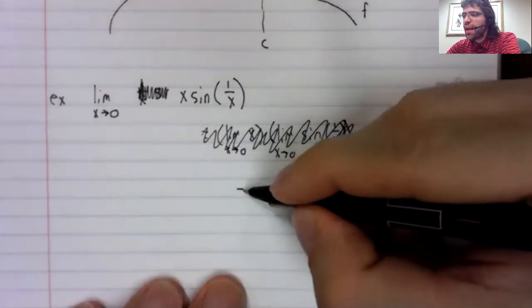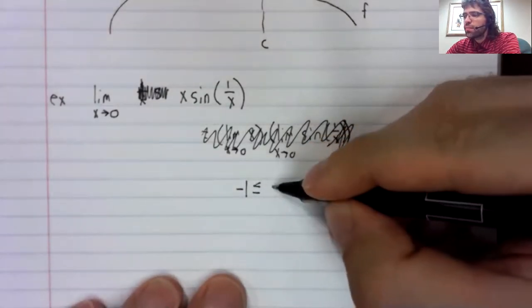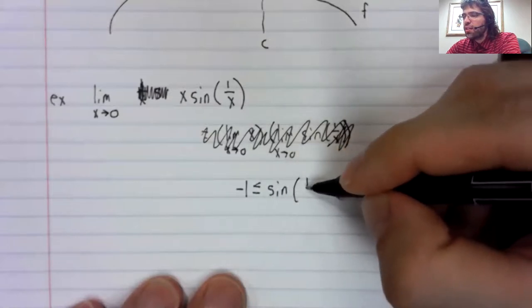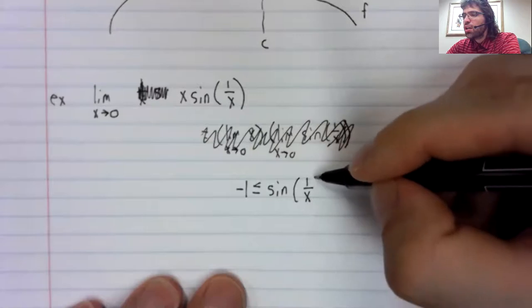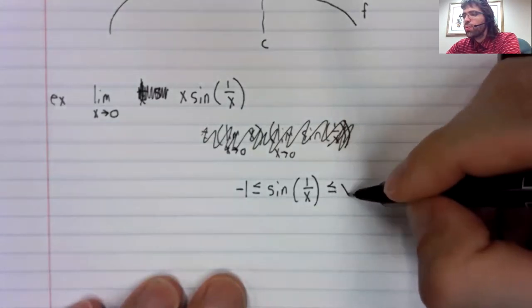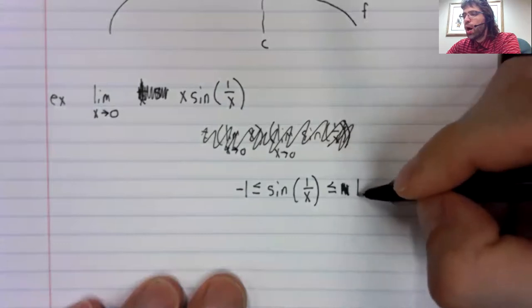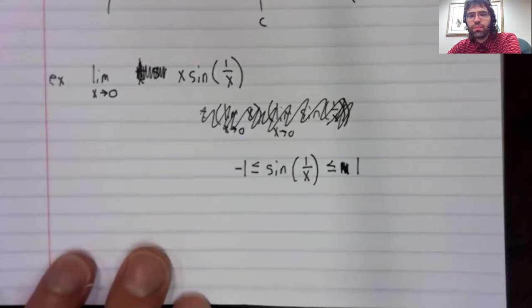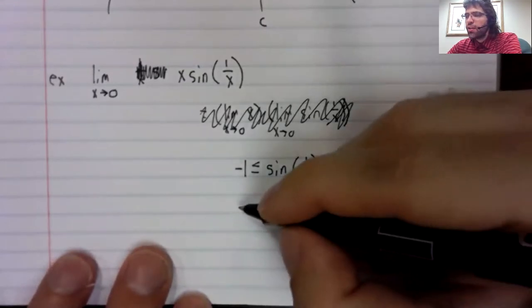What we can say is that the sine is stuck between negative 1 and 1. And therefore,